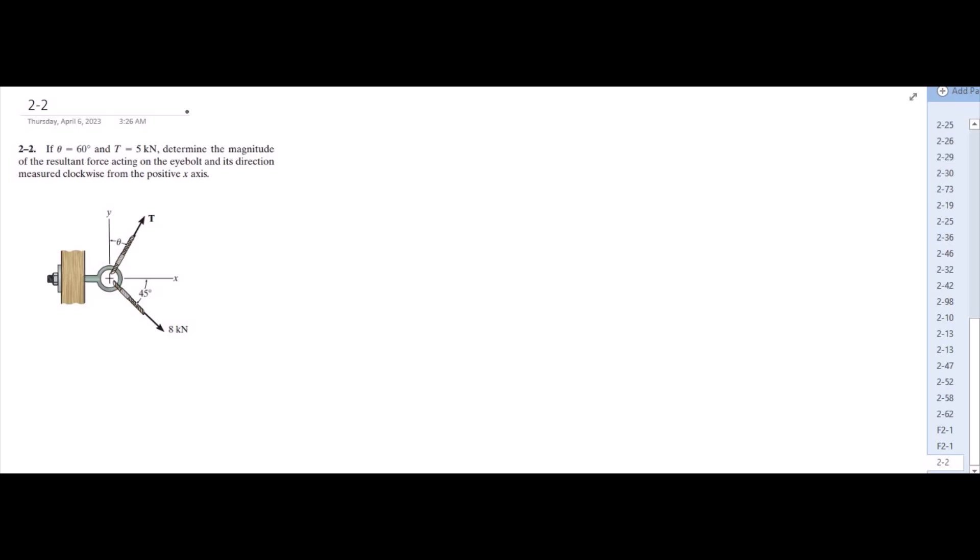Welcome back to the solutions manual. In this video, we will solve problem 2-2 from R.C. Hibbeler engineering statics 14th edition. According to this problem, if theta equals 60 degrees and P equals 5 kN, we determine the magnitude of the resultant force acting on the eyebolt and its direction measured clockwise from the positive x-axis.